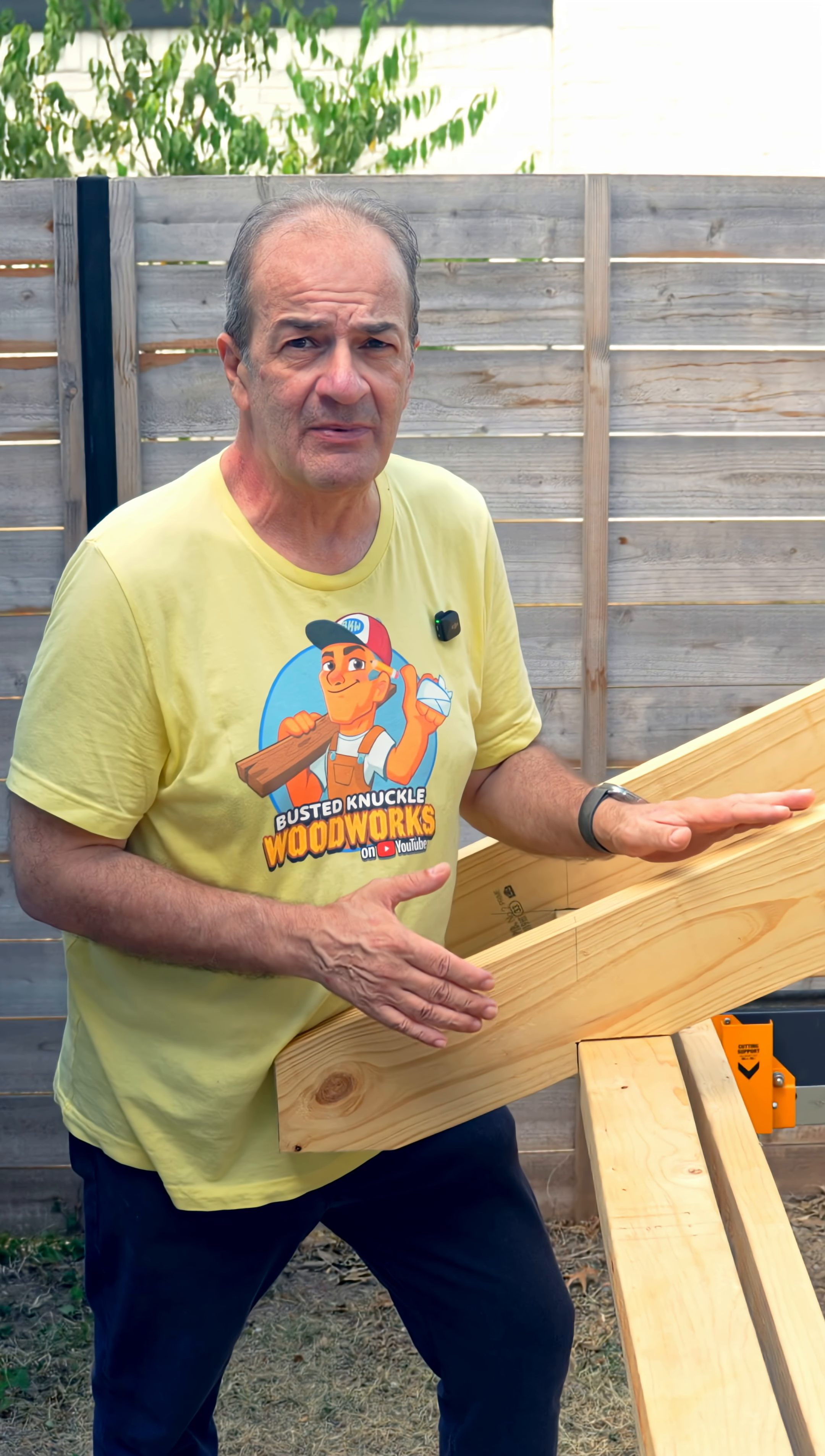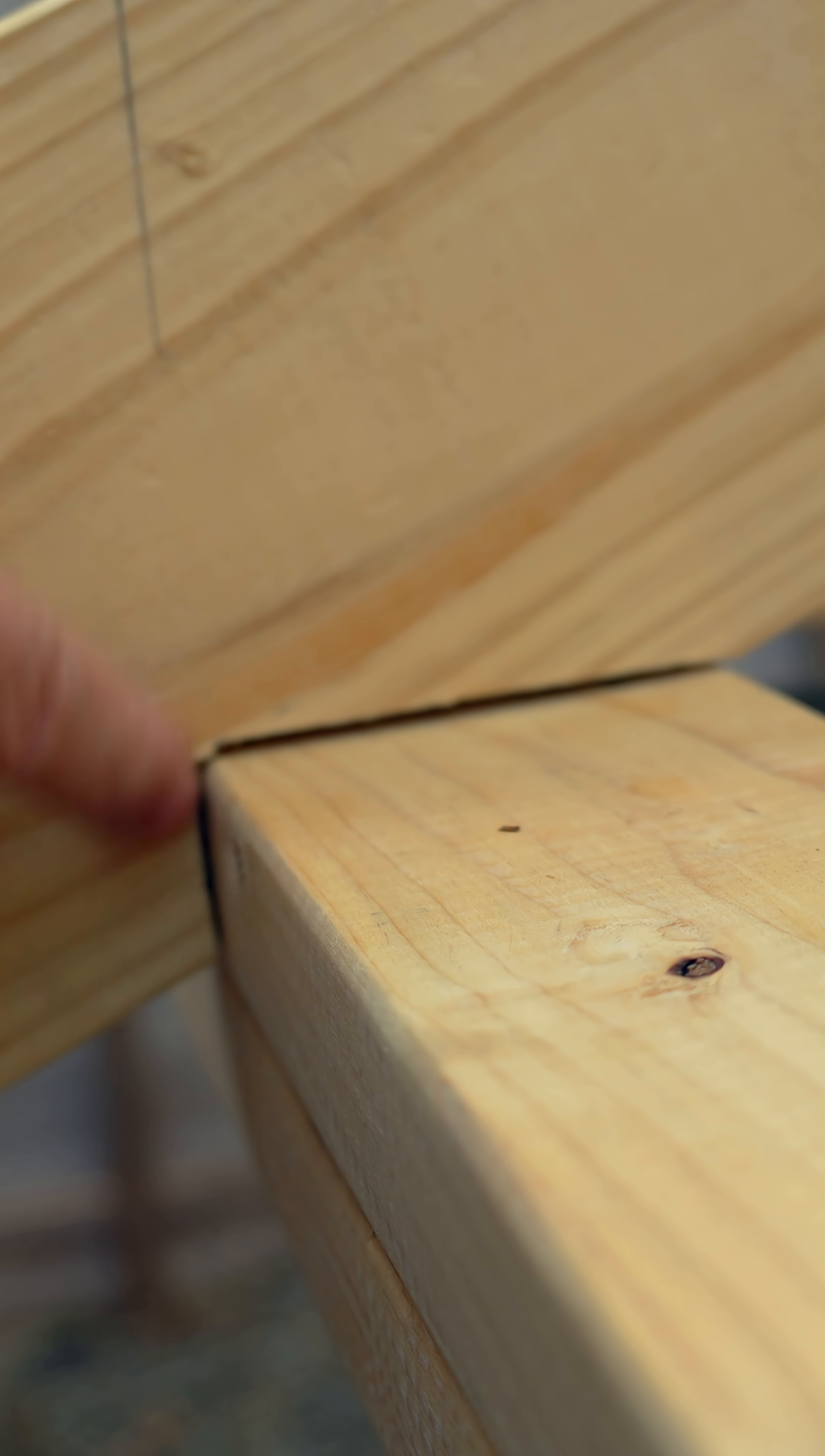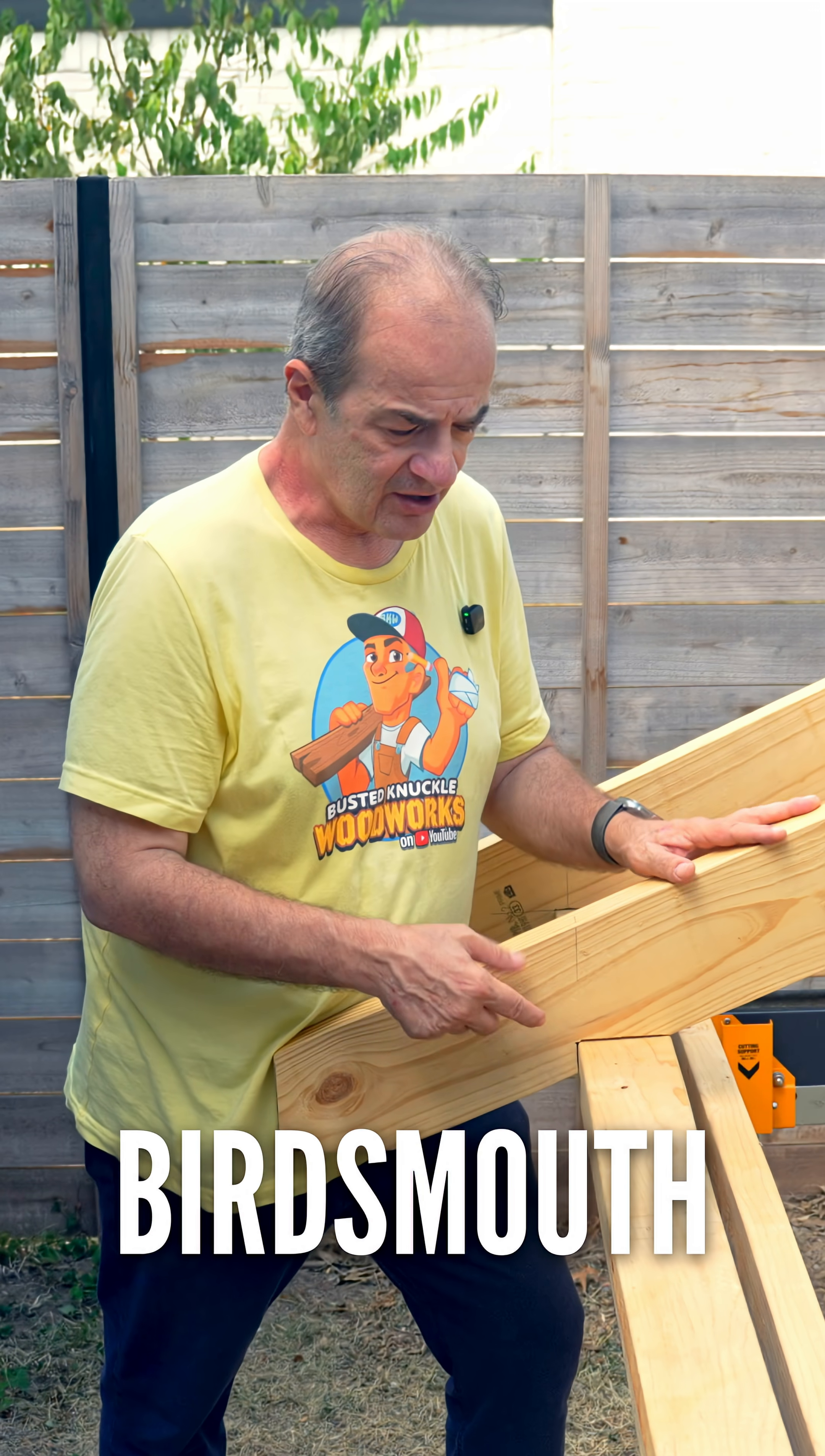Next, we need to make two cuts here in the middle for this rafter to sit on our top plate. A vertical heel cut and a horizontal seat cut. That's called a bird's mouth.